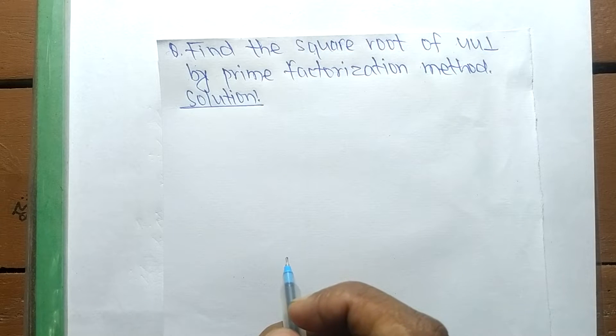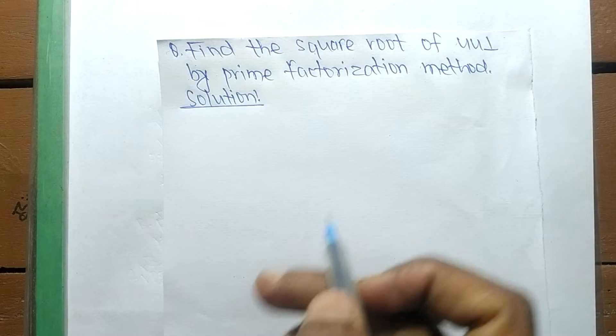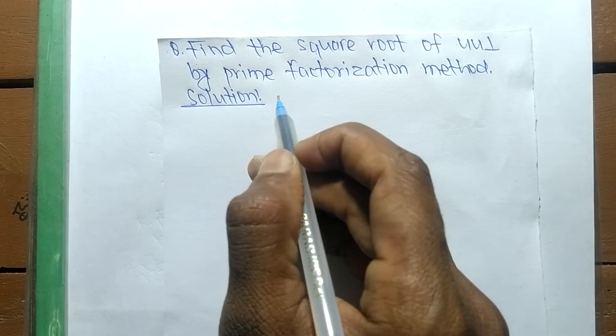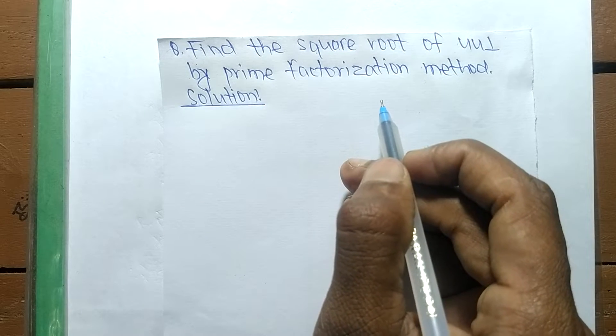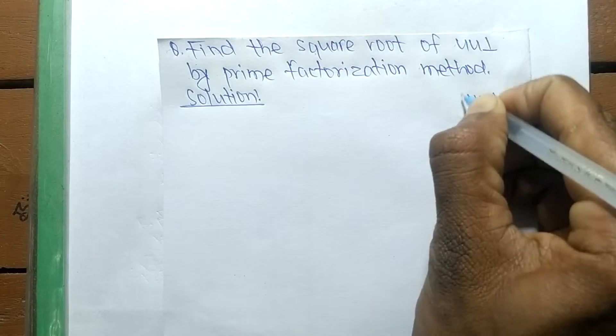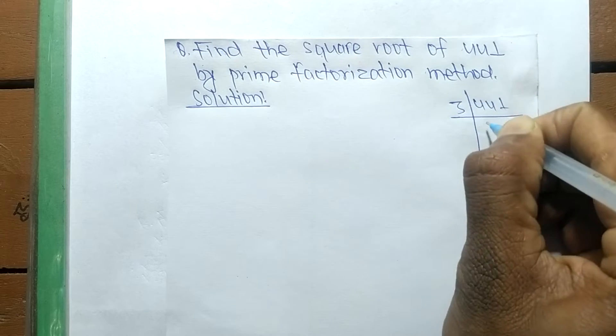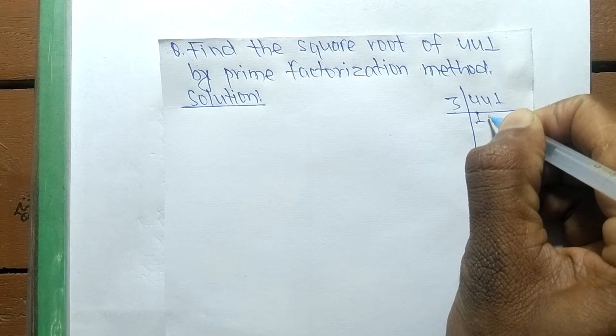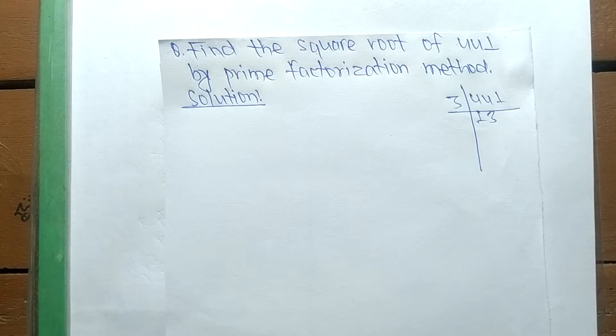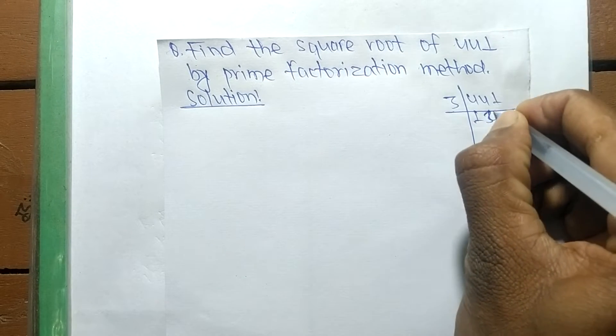Today in this video we shall learn to find the square root of 441 by prime factorization method. First, we find out the prime factors of 441. It is 3 times 3, and 7 times 7.